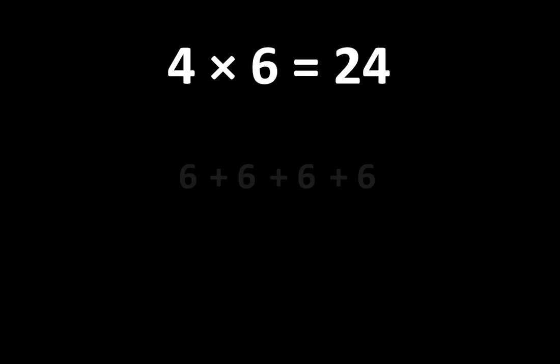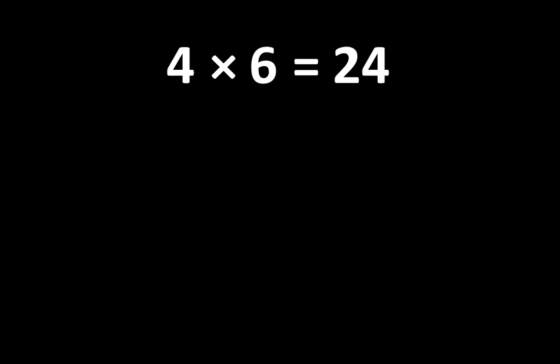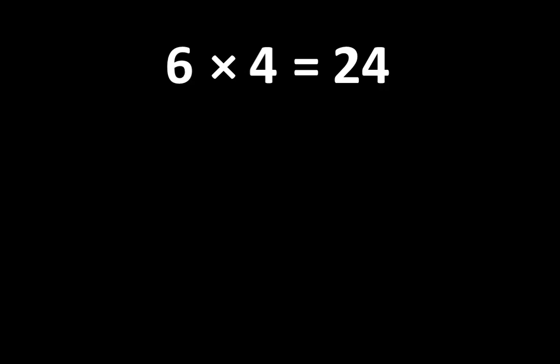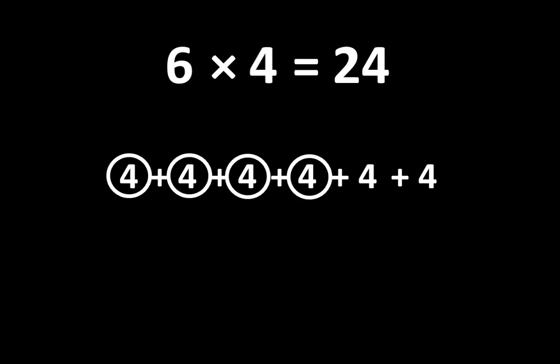We can think of 4 times 6 as 4 groups of 6 — you may recognize this as repeated addition. There are 1, 2, 3, 4 groups of 6, and the total of 4 groups of 6 is 24. And if 4 times 6 is equal to 24, we also know that 6 times 4 is equal to 24, so we can think of 24 as 6 groups of 4. Counting the groups: 1, 2, 3, 4, 5, 6 groups of 4, which is equal to 24.